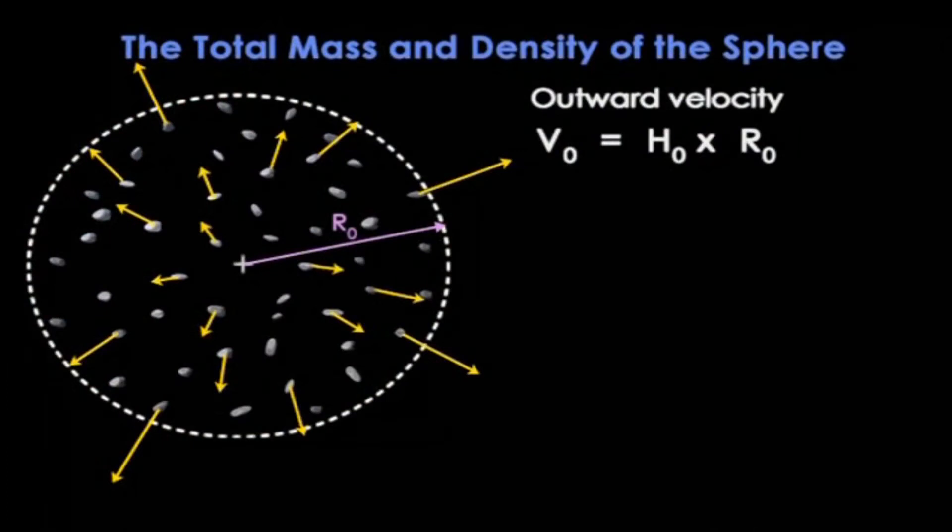Now, for our cosmological purposes, there's actually a more interesting way to express this critical condition. So let's look at that now. Here's our initial situation. You can think of it as today's universe, and I'm going to use a subscript nought for any property of this initial situation.